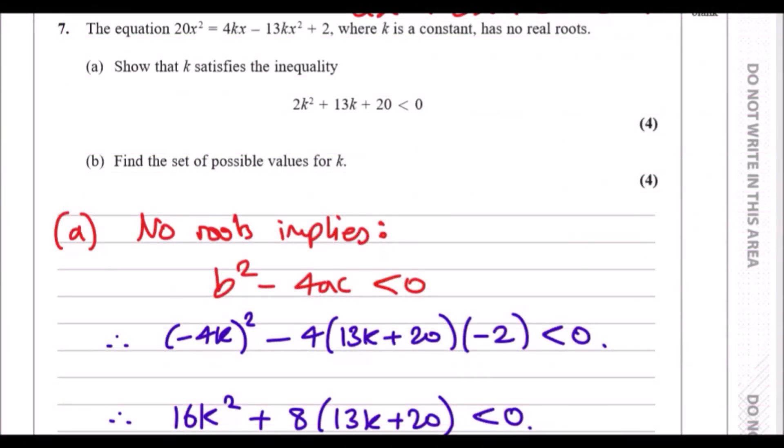Alright, number seven. This one was a very straightforward question, but let's have a look because sometimes it can be tricky. They give us an equation which is 20x² = 4kx - 13kx² + 2, where k is a constant and has no real roots.